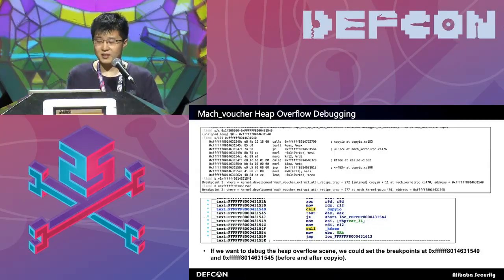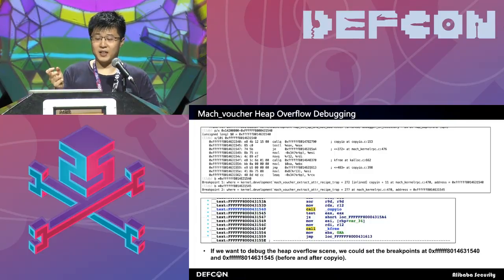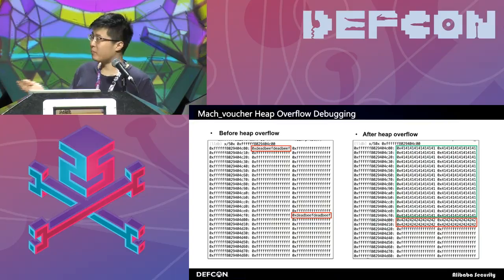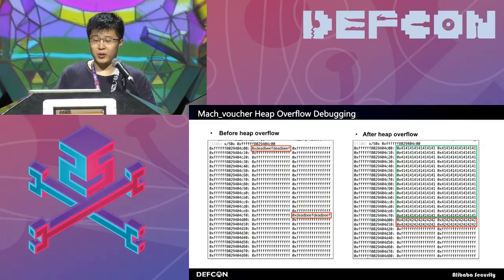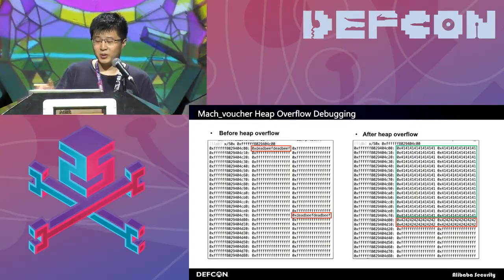If we want to debug this vulnerability, we can set breakpoints before and after copyin. The addresses are calculated through the offset in the kernel cache plus the kernel slide. As you can see, before the heap overflow, we can find the flag 0xDEADBEEF. The DEADBEEF pattern means this block of memory is unused, but the next block of memory is used with 0xFFF. After we trigger the heap overflow, we can find the first block is full of our data with character 'A', and the next block of memory is overflowed by 32 bytes with character 'B'.